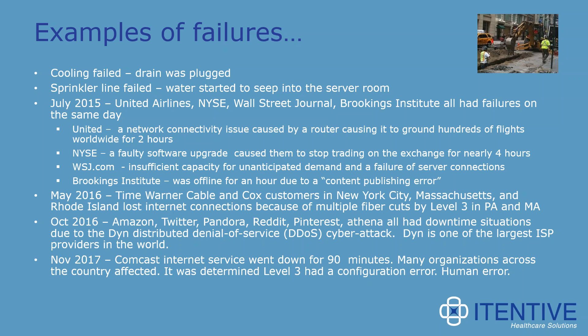In July of 2000, United Airlines, the New York Stock Exchange, the Wall Street Journal, and the Perkins Institute all had failures on the same day due to a network connectivity issue caused by a router. United had to ground hundreds of flights for a couple of hours. The New York Stock Exchange had a faulty software upgrade that caused them to stop trading for nearly four hours. The Wall Street Journal had insufficient capacity for unanticipated demand on their website. And the Brookings Institute went offline for about an hour due to a content publishing error. These four organizations are built for 24/7/365 uptime — if they can have failures like this, it can affect any one of us.